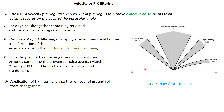Velocity filtering aims to remove coherent noise events. For a particular shot gather there is a reflected event along with surface-propagating seismic events. This is a 2D filtering transformation of seismic data from the TX domain to the frequency domain. In this FK domain you can identify ground roll noise, backscattered noise, and high-velocity noise. The objective is to eliminate backscatter, high velocity noise, and ground roll by drawing a polygon and eliminating everything outside it, retaining only the seismic reflected event.